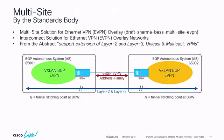Multi-site by the standards bodies is not just layer 2 — it's layer 2 and layer 3. It complements RFC 9014 instead of competing with it. Why would we compete with an RFC we wrote ourselves?